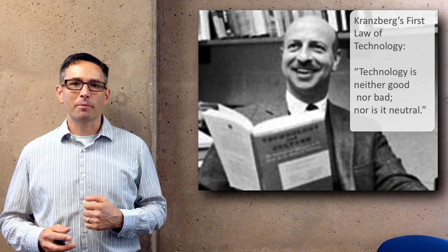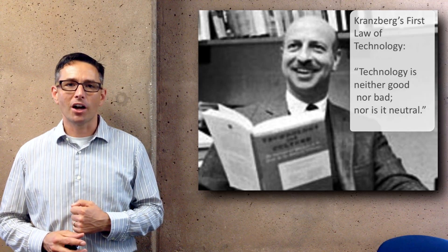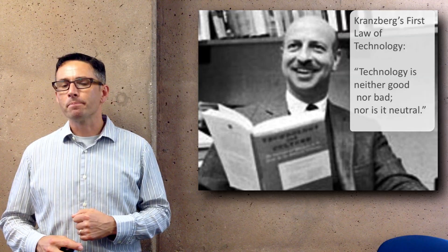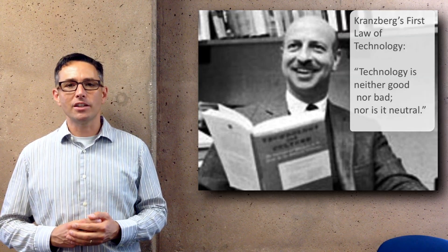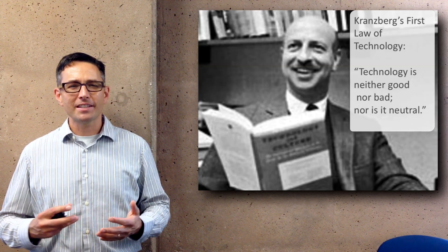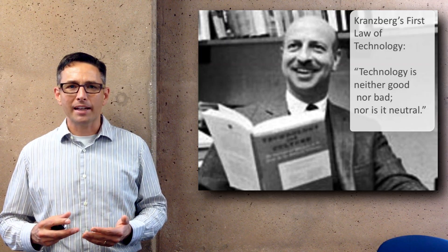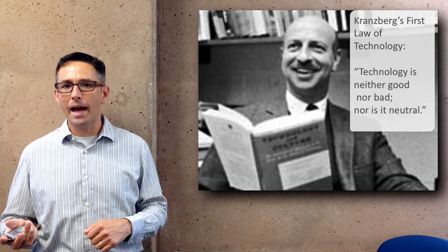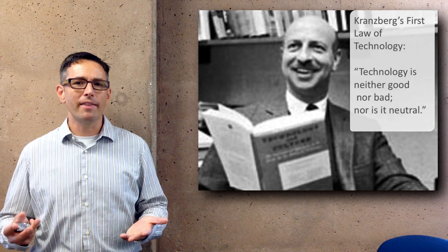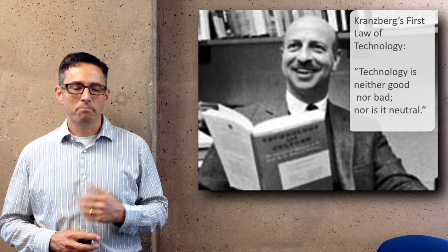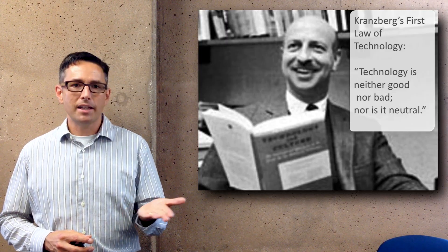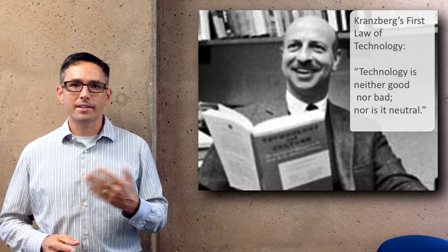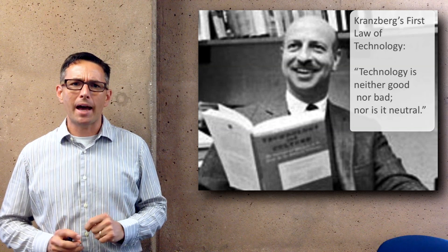A more humorous definition is something called Kranzberg's First Law of Technology. It's humorous, but it draws out the idea that there are values embedded in technology. The law is as follows: technology is neither good nor bad, nor is it neutral. This tries to get us to think about the fact that just because you have a technology doesn't mean it's necessarily going to be used for something good, but it's also not necessarily going to be used for something bad. Different technologies certainly lend themselves to different kinds of uses — think about a gun: it lends itself to law enforcement and crime, but not to the same things a plow or a satellite might be used for. So it's not explicitly good nor bad, but it's not completely neutral either.